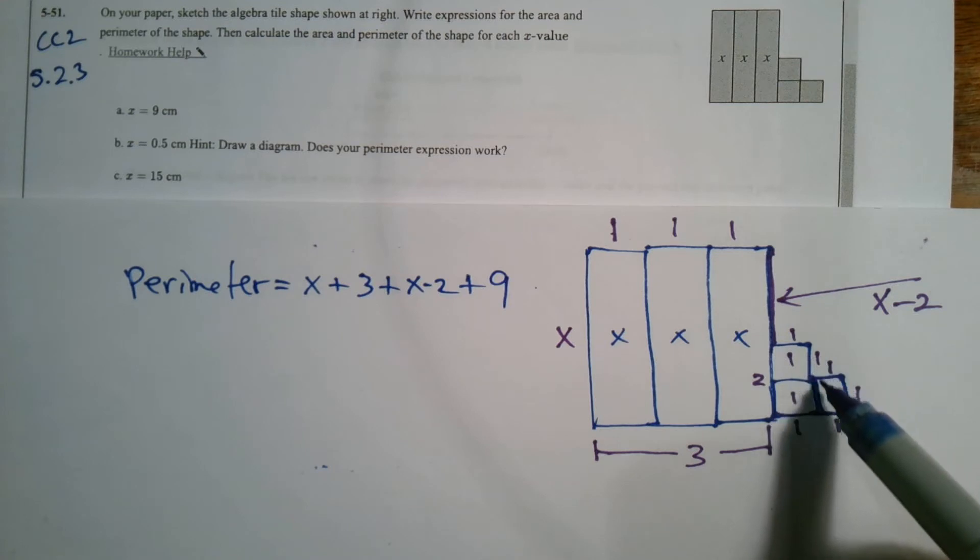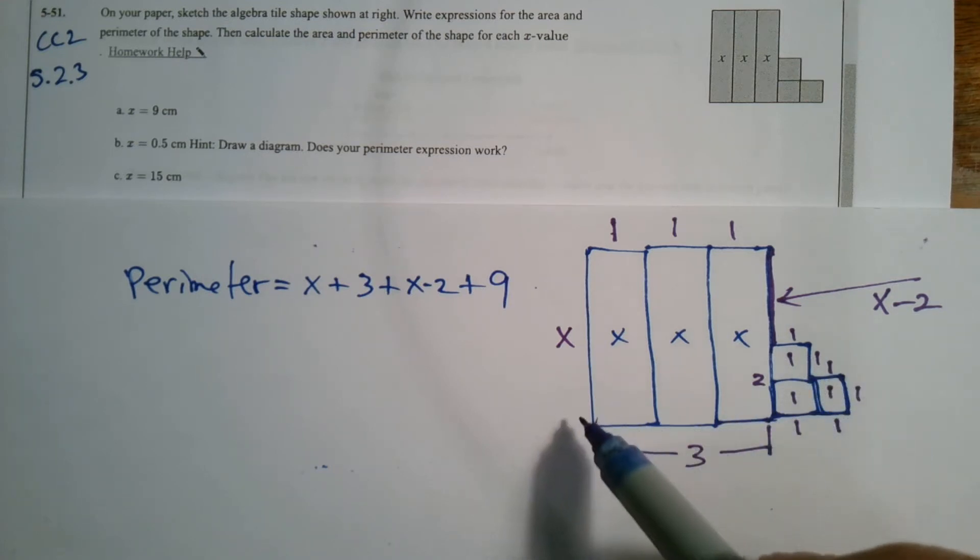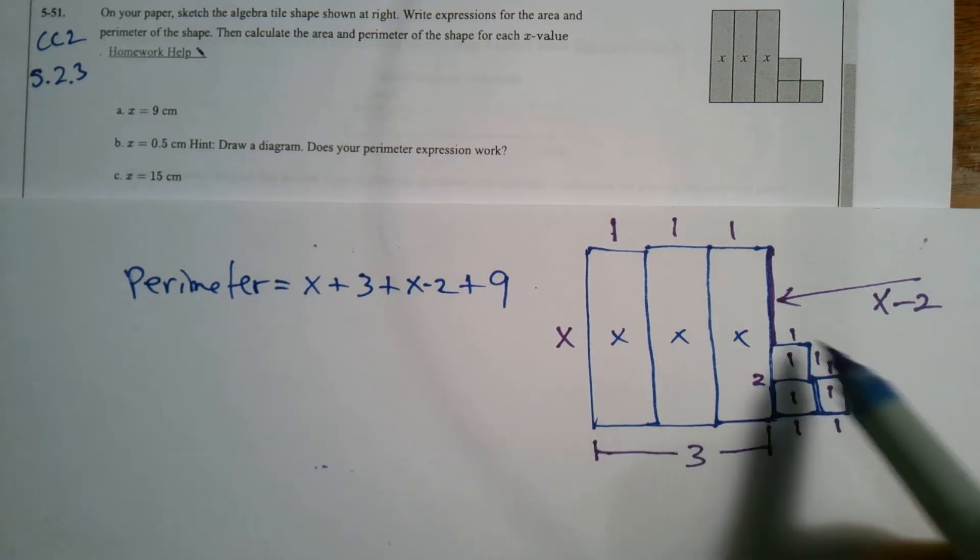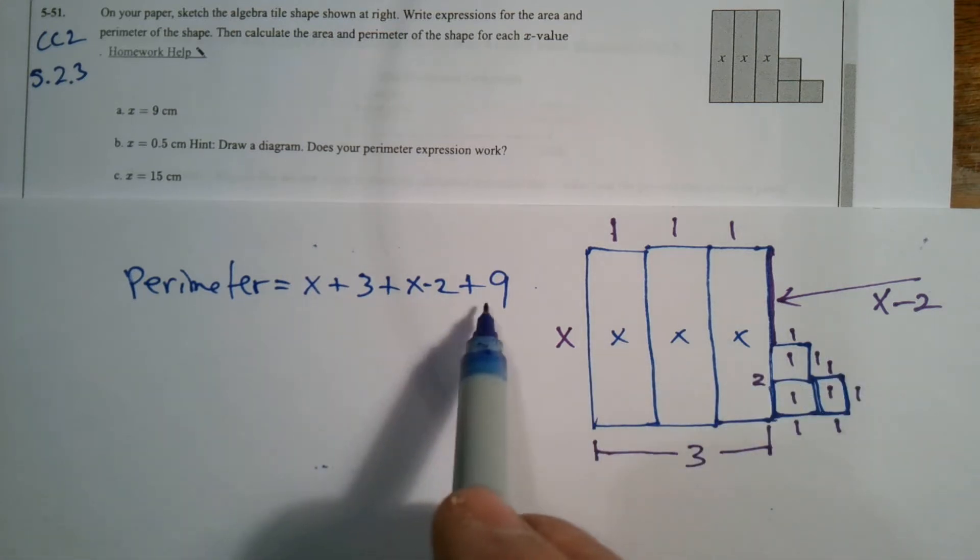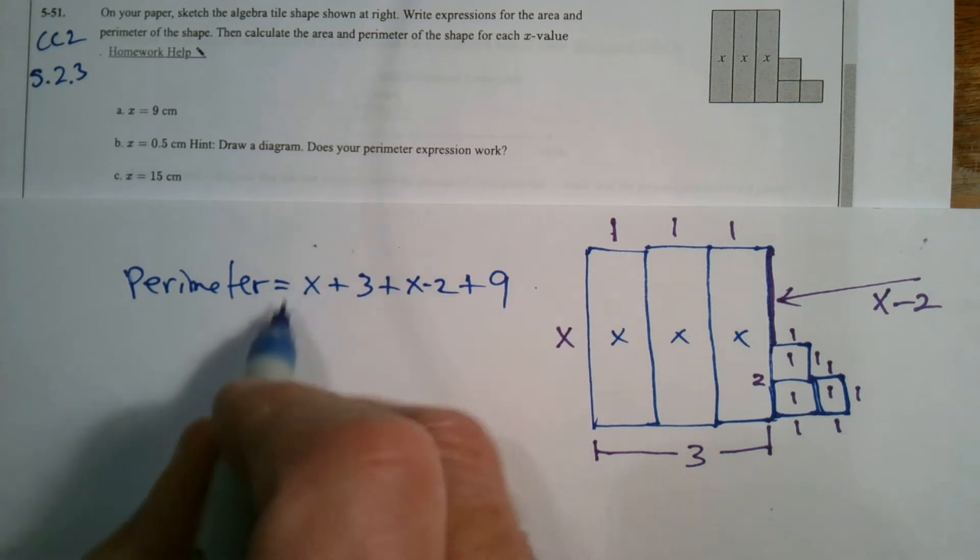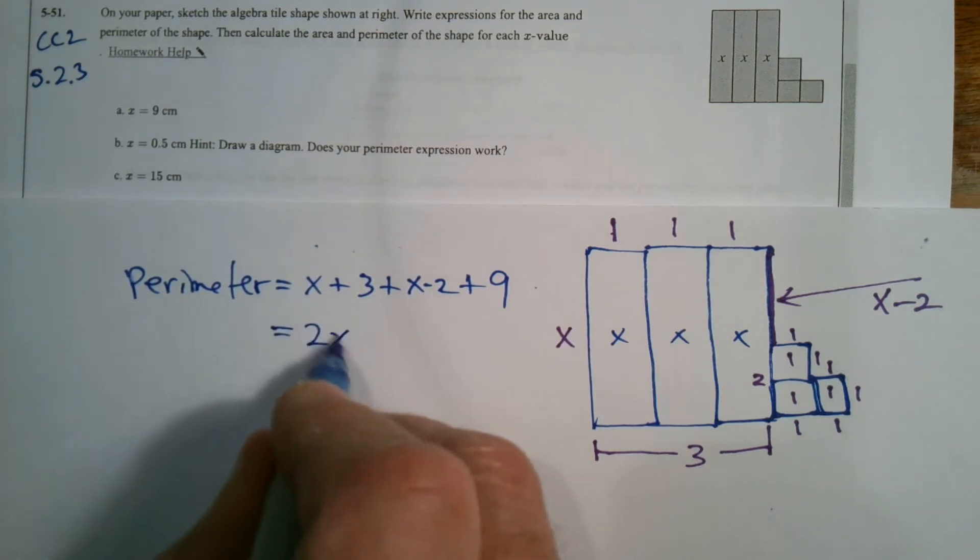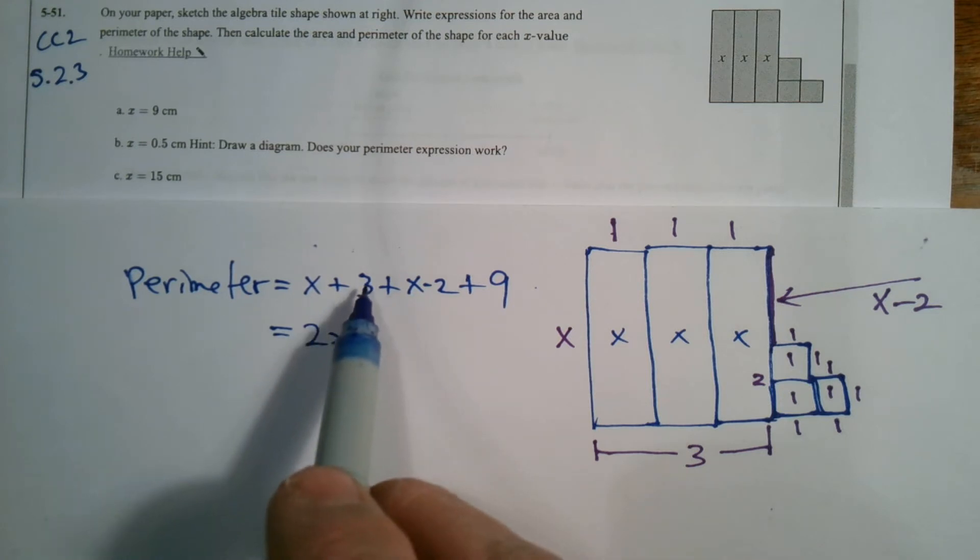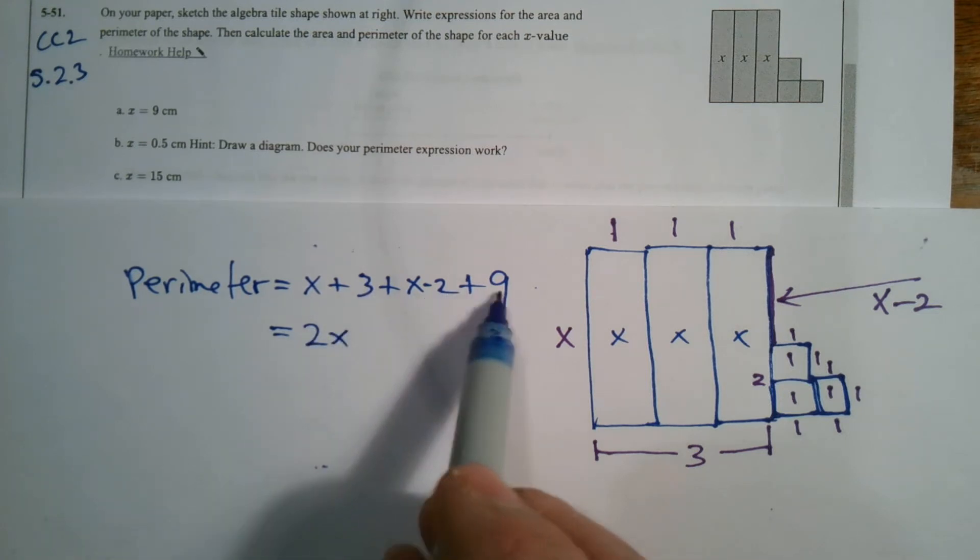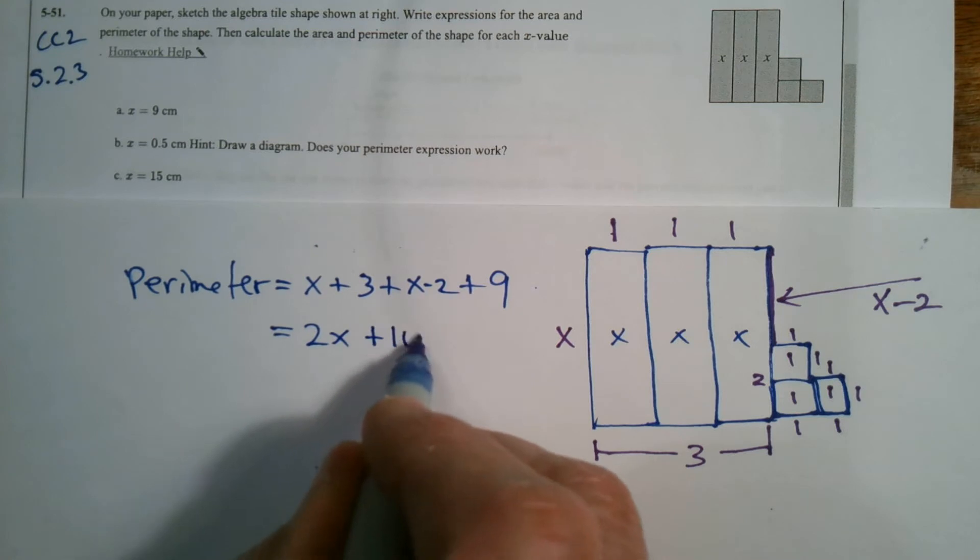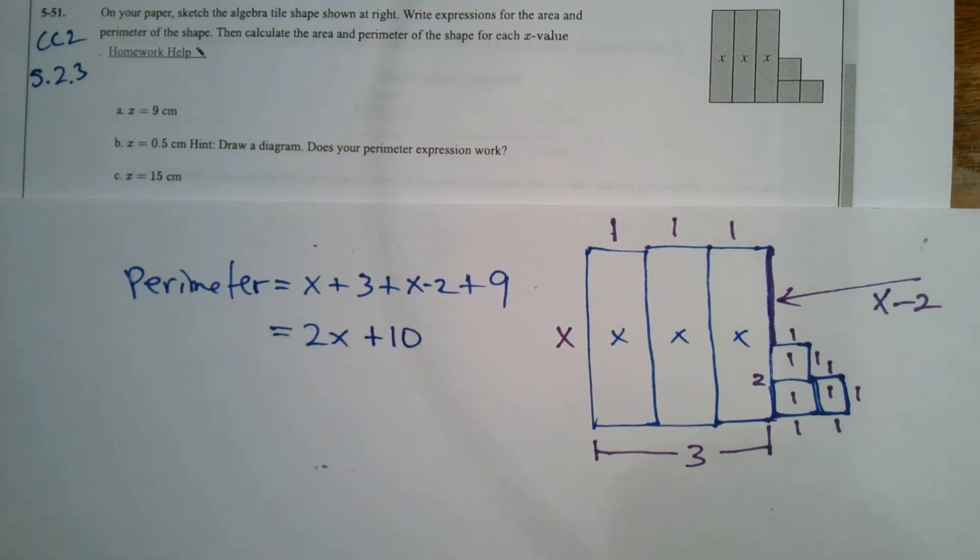See what I just did there? So I added the one, two, three, four, five, six plus three is nine. So that's my perimeter written out in expanded form. But I can actually also simplify this. I can see that there's two X's. And then I can do the math here and say, well, there's three minus two is one. One plus nine is ten. So the simplified version of the perimeter is 2X plus 10.